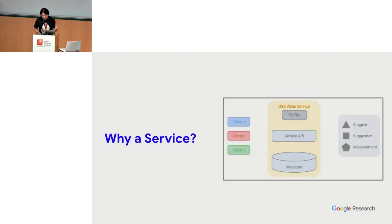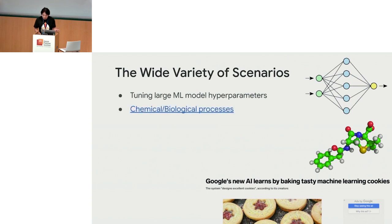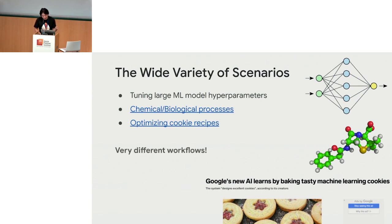A question we get asked all the time is: why is Vizier a service? There are a wide variety of scenarios in hyperparameter tuning. You can use it to tune large machine learning models, chemicals and biological processes, or even to bake cookies — my team has actually used this to bake cookies and people said they were pretty tasty.